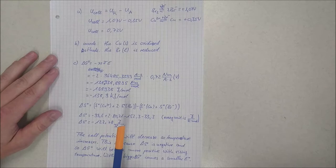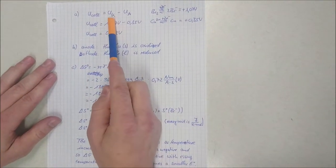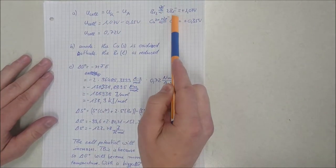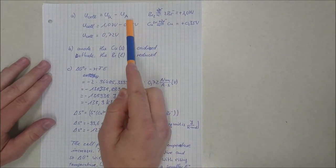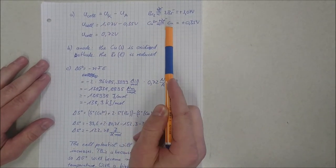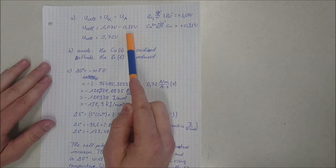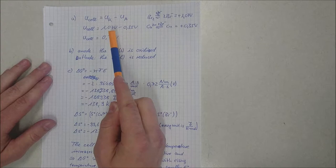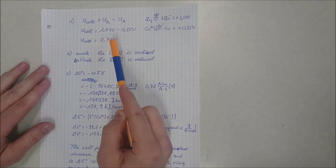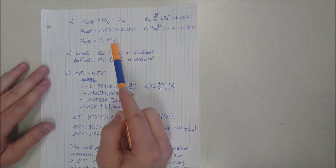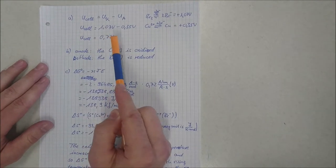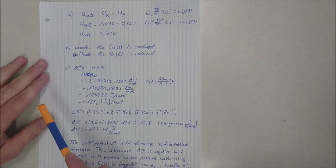For this, you have the standard EMF of the cathode, which is the bromine, and the anode, which is the copper. You subtract the anode from the cathode, which gives 0.72 volts as the standard EMF of the cell.